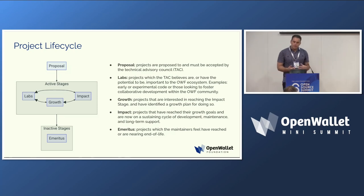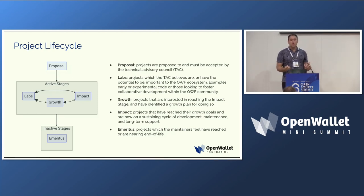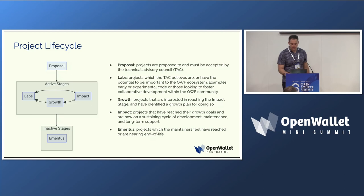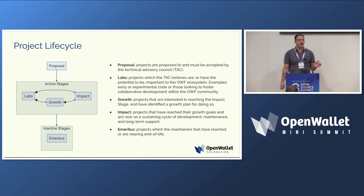Because not every project is successful — and we want people to be okay with this — we do have a project status called emeritus, for projects that are finished or whose maintainers feel are reaching the end of their life. And I want to emphasize that this is a natural part of the open source lifecycle. As Jim Zemlin will tell you, there are really only one or two projects that have defied gravity in open source, and this is a natural thing.